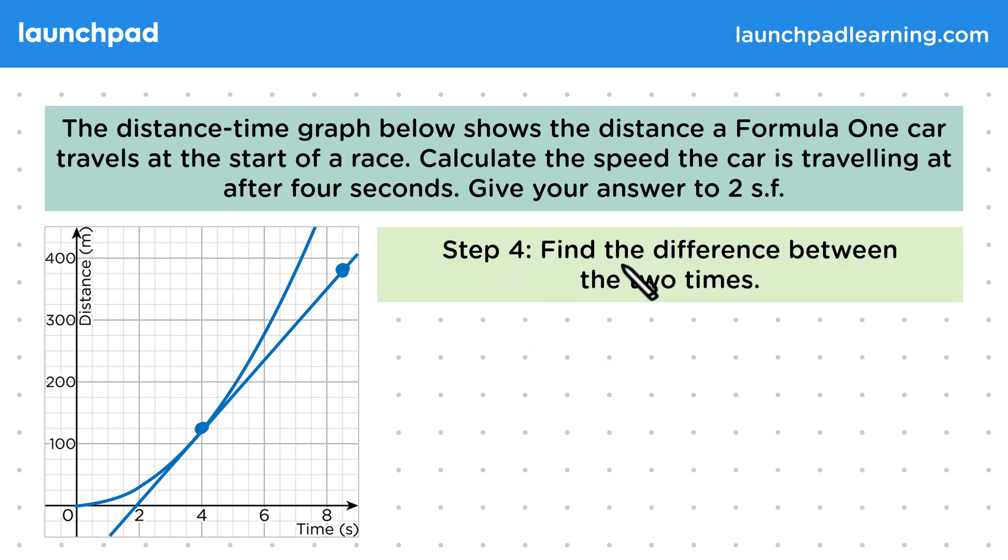Then in step 4, find the difference between the two times. We chose points where the times were 4 seconds and 8.5 seconds, so we have that 8.5 minus 4 equals 4.5 seconds.